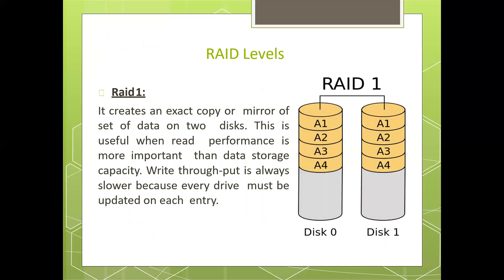RAID level 1 creates an exact copy — that is the mirroring concept. This is useful when read performance is more important than data storage capacity. Write throughput is always slower because every drive must be updated on each entry.